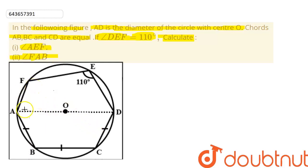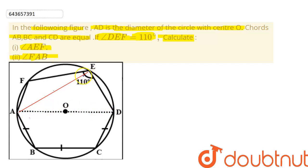For this question we are going to make some constructions — we are going to join the points A and E. Now, since the diameter of any circle subtends a right angle of 90 degrees on the circumference, here AD is the diameter subtending an angle at point E. So angle AED is 90 degrees.